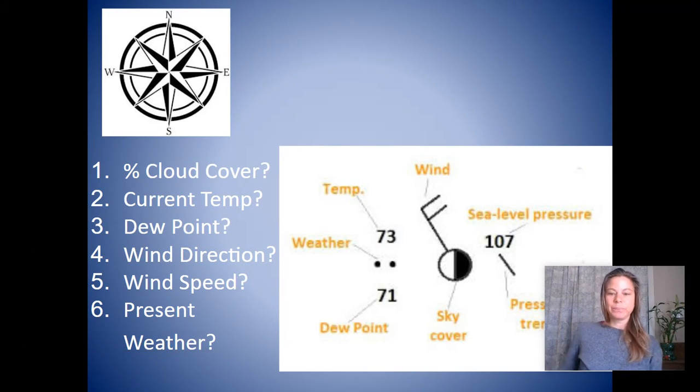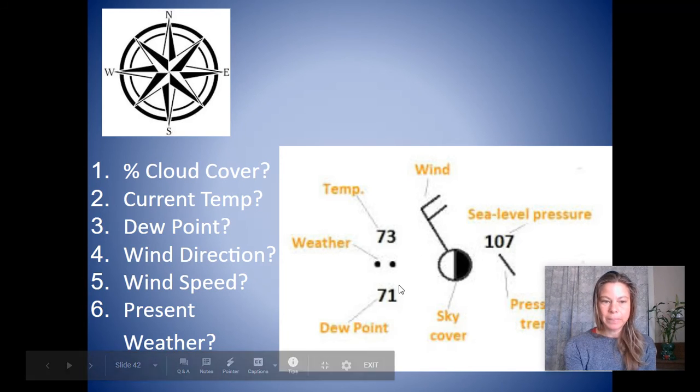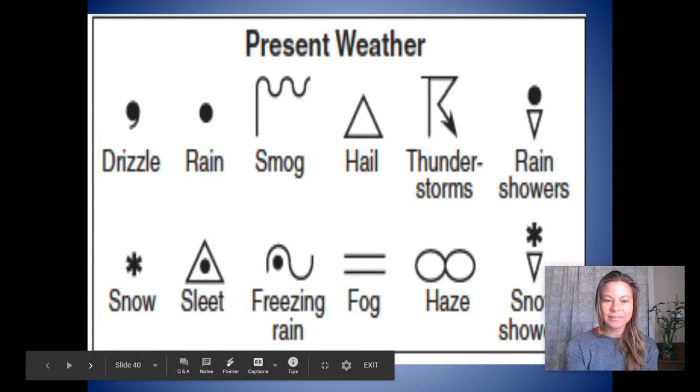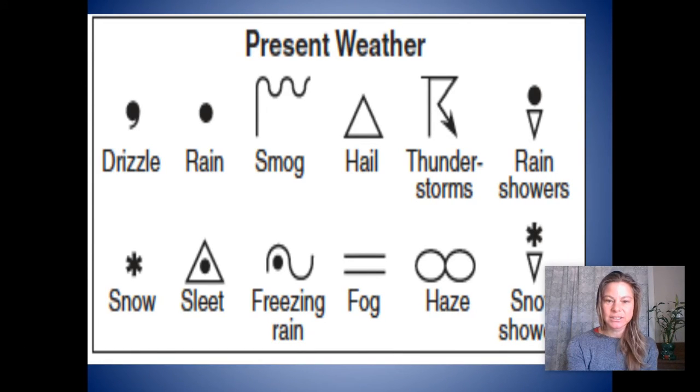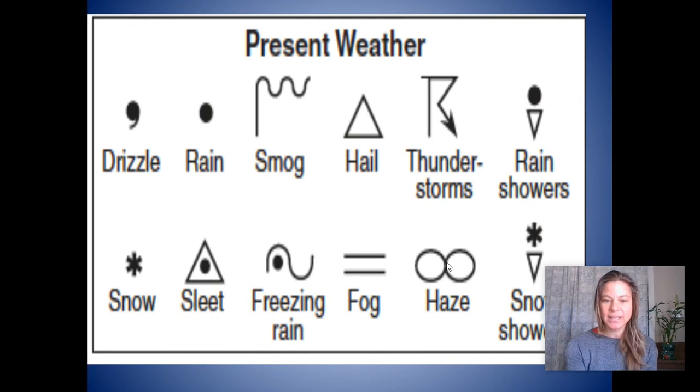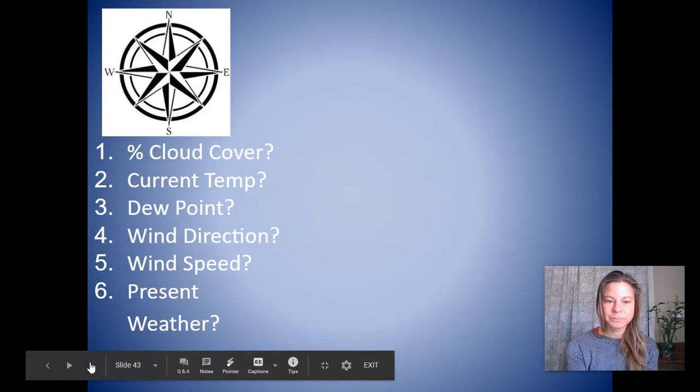So let's try and figure this one out. What is the percent of cloud cover here? Fifty percent, right? Half of the little circle is covered in, fifty percent cloud cover. What is the current temperature? Seventy-three. What's the dew point? Seventy-one. What is the wind direction? It's coming this way, so it's coming from the northwest. Wind speed, two long ones, twenty. Present weather, two little dots. I don't have two little dots. Oh, haze. I think that's an easy way that they did haze. So two little dots, haze.